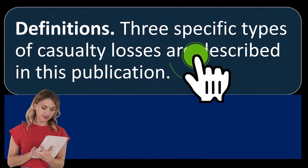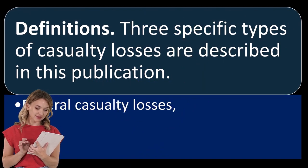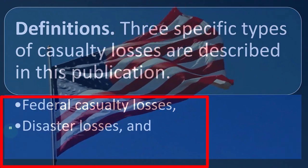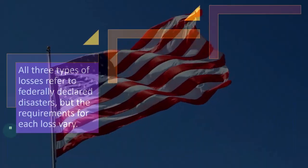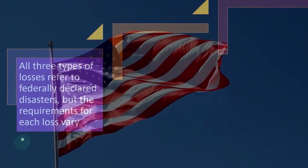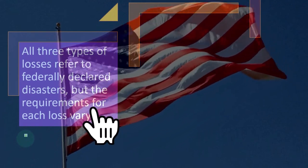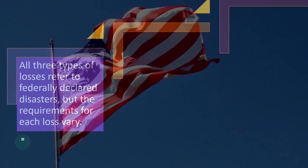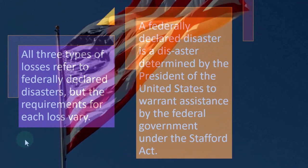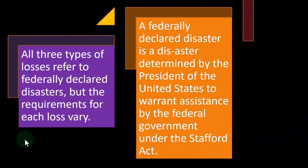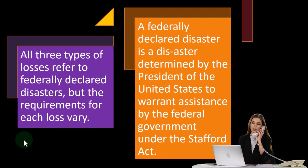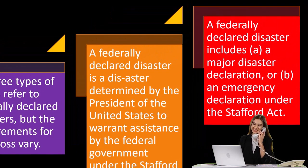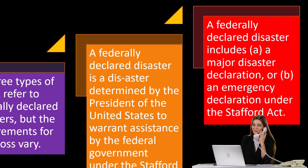Definitions: three specific types of casualty losses are described in this publication — federally declared losses, disaster losses, and qualified disaster losses. All three types refer to federally declared disasters — your cousin stealing money from your wallet is not a federally declared disaster. A federally declared disaster is a disaster determined by the President of the United States to warrant assistance by the federal government under the Stafford Act. It includes a major disaster declaration or an emergency declaration under the Stafford Act.